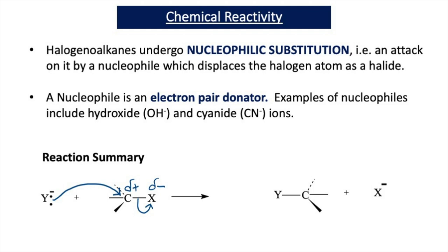In this video, we're going to look at the main type of reactions that halogeanoalkanes undergo. Halogeanoalkanes undergo nucleophilic substitution reactions. A substitution reaction is a reaction where reactant atoms swap or rearrange to form products. These reactions are nucleophilic substitution reactions because there is an attack on the halogeanoalkane by a nucleophile which displaces the halogen atom as a halide.